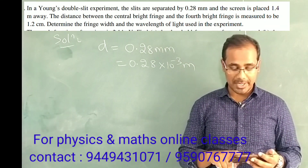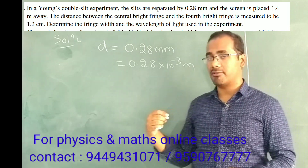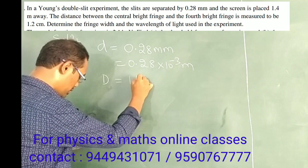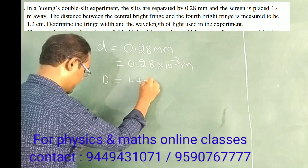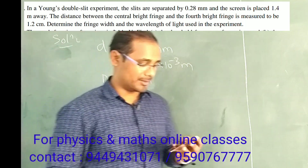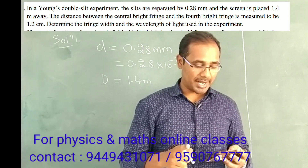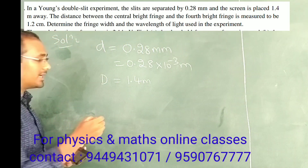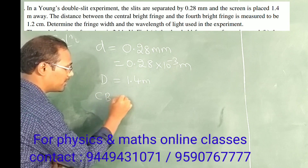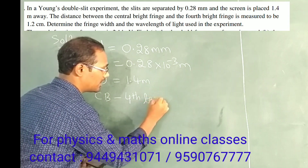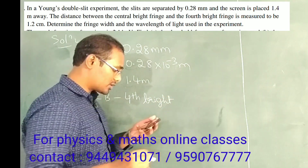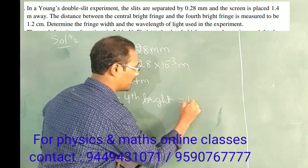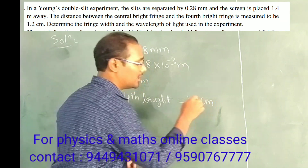The screen is placed 1.4 meter away. Capital D is 1.4 meter. Next, the distance between the central bright and the fourth bright fringe is 1.2 centimeter.